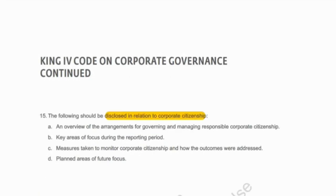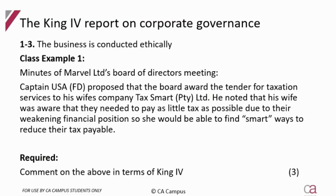That covers principles one, two, and three. Note that there is specific disclosure required for ethics and for corporate citizenship. This disclosure will start to sound repetitive, because for everything that needs to be disclosed, they need to give an overview, the key focus areas, the measures, and the future focus. Let's attempt a class example — I'm going to give you guys five minutes to do this.